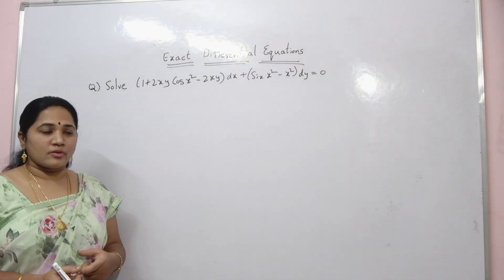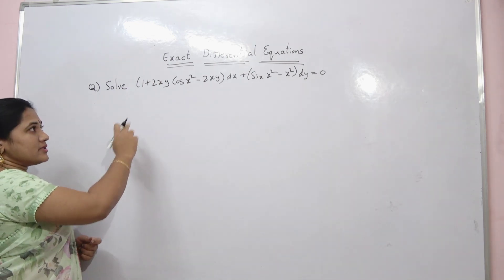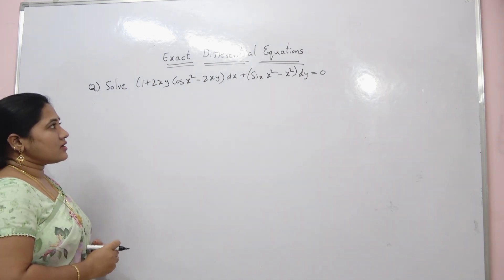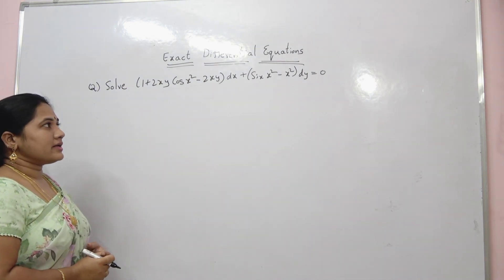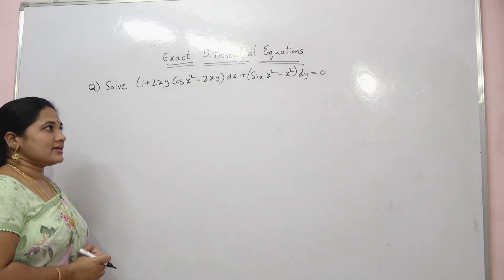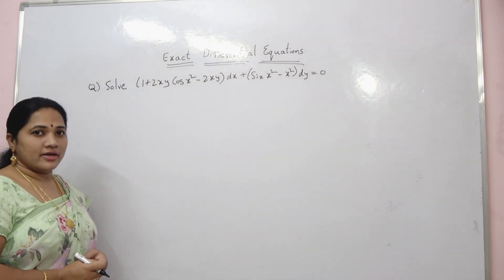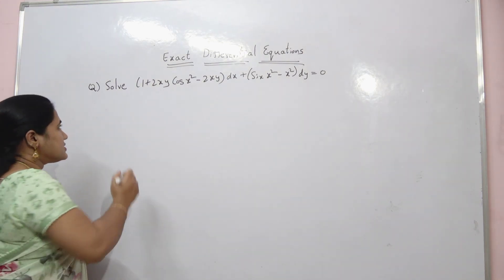Now I will solve the problem. Solve: (1 + 2xy cos(x²) − 2xy) dx + (sin(x²) − x²) dy = 0.